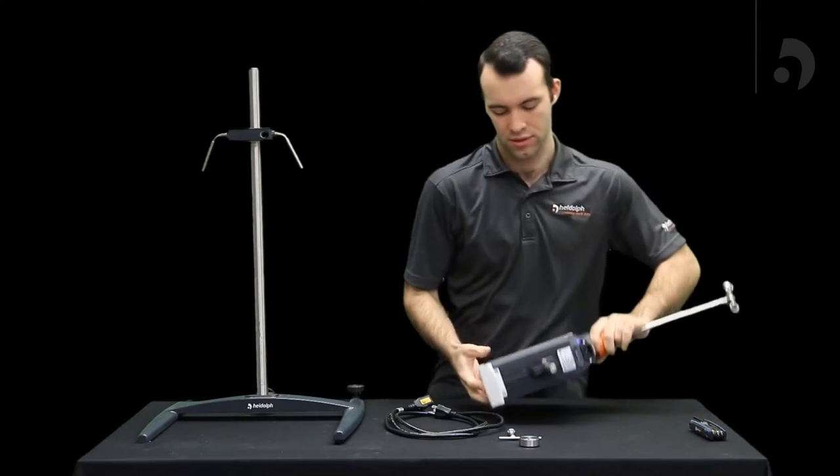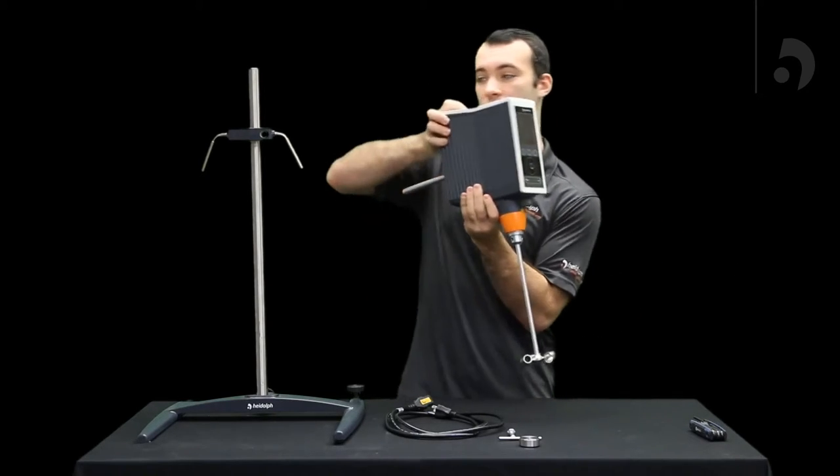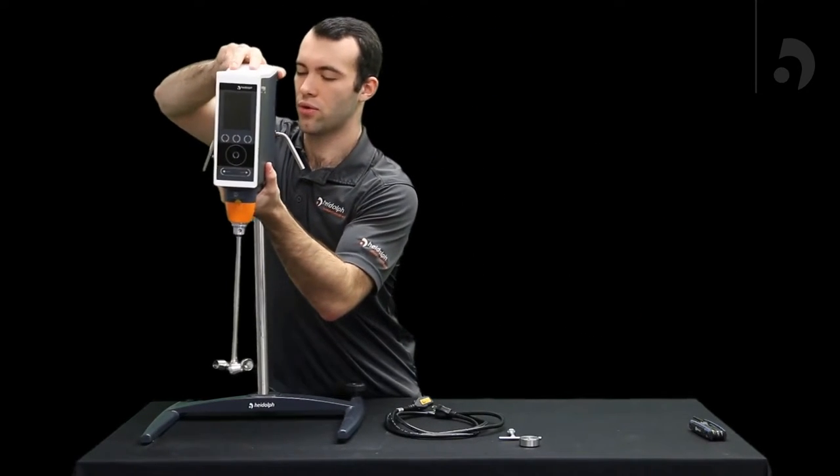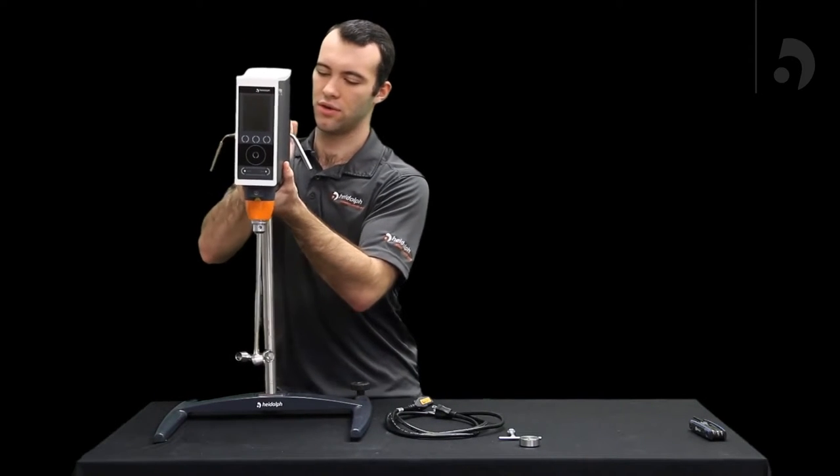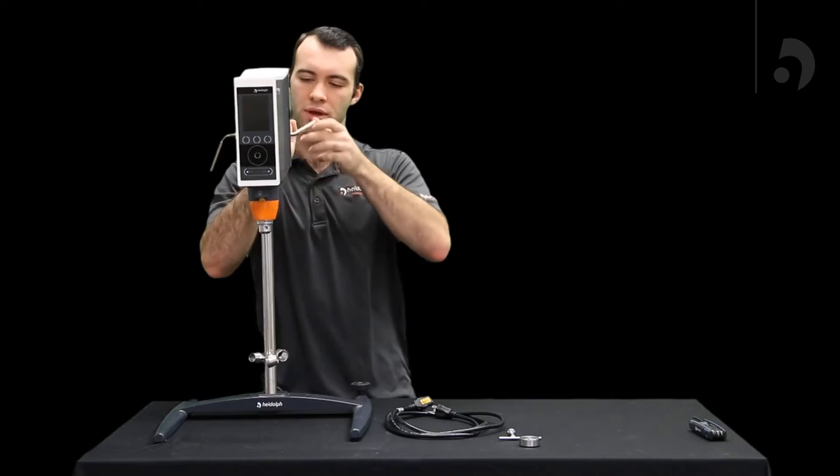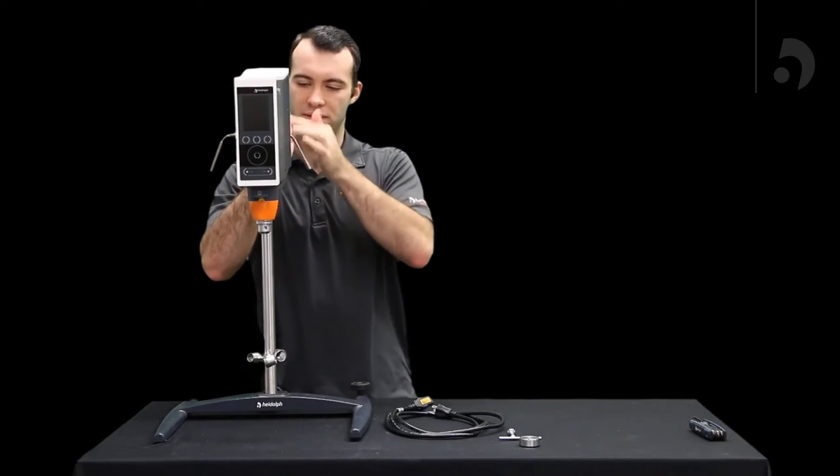Once that's on, take your HITORQ, put it through the other hole in the universal clamp, and using the other side tighten it very tight.